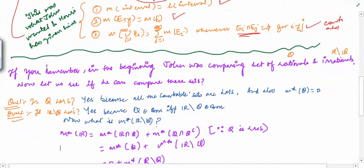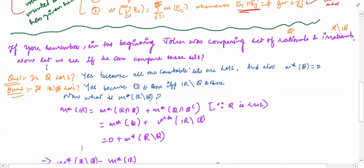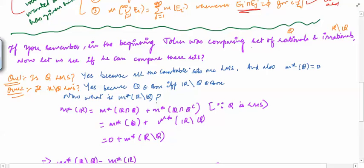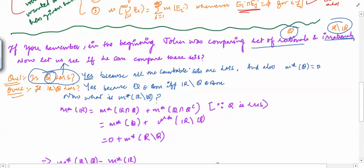Now let us see whether we are able to remove the confusion which John was having in the beginning. John went to the market and had the set of rationals and the set of irrationals, and he wanted to compare them but did not have any parameter for comparison. Now let us see whether we have given him a comparison parameter. We start with the set Q, the set of all rationals. The first question is whether Q is a Lebesgue measurable set — and the answer is yes, because Q is a countable set and all countable sets are Lebesgue measurable sets.